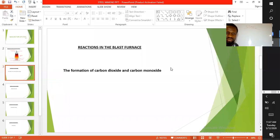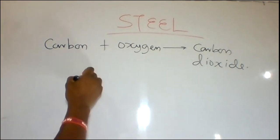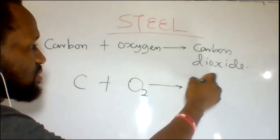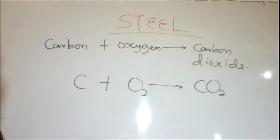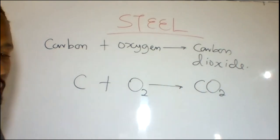Now let's take a look at the formation of carbon dioxide and carbon monoxide. What is the importance of having carbon dioxide and carbon monoxide in the formation of steel? Carbon combines with oxygen to form carbon dioxide. The equation for the reaction is C + O2 → CO2. But carbon dioxide is not the reducing agent, so there is a need for the formation of carbon monoxide.